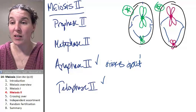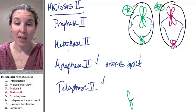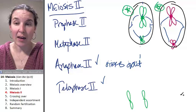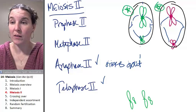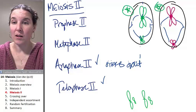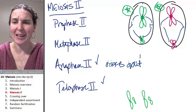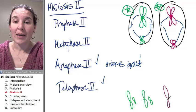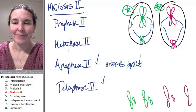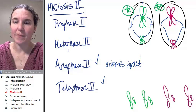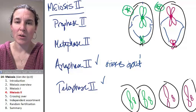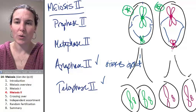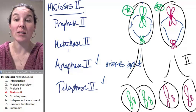End result is four little gametes. There they are. These are my end gamete results. And that was my meiosis II.